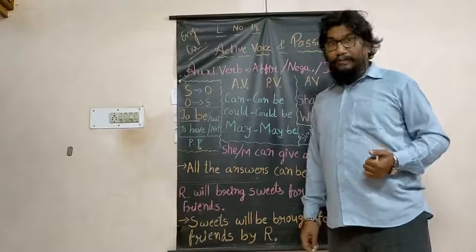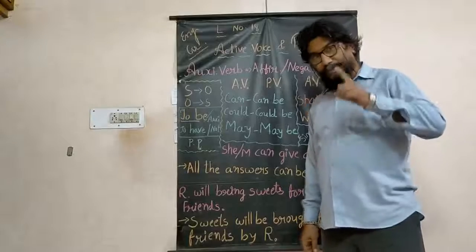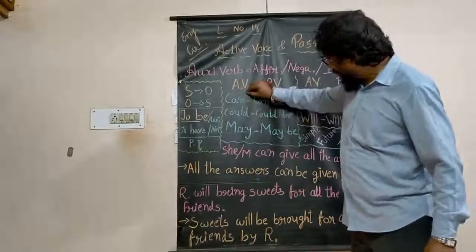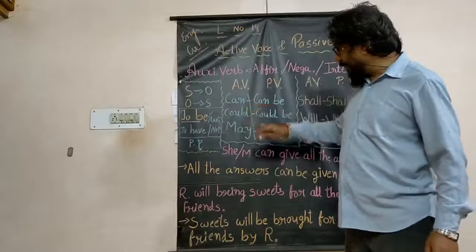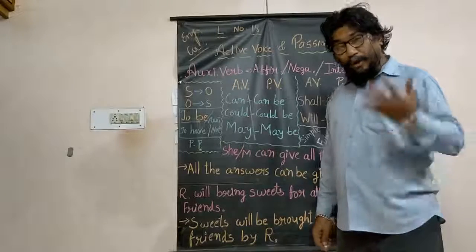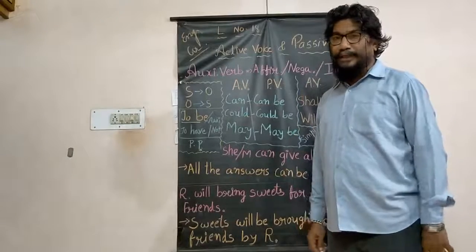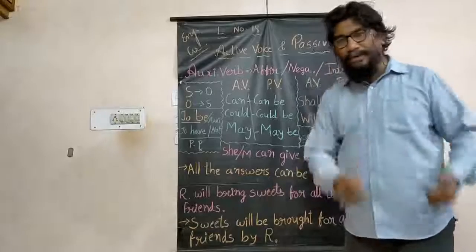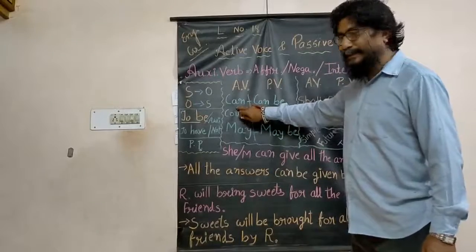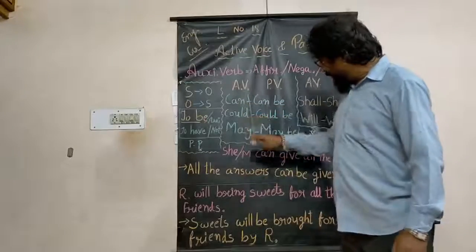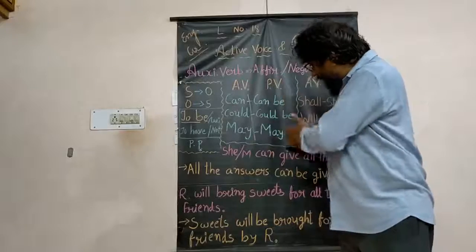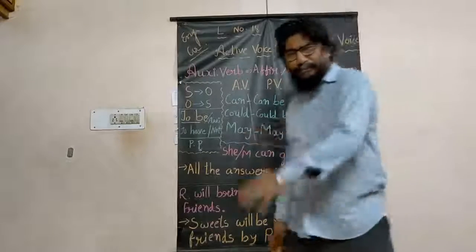Tense will not be given over there because an auxiliary verb is used instead. But the idea is very simple. In active voice, can will be given, could will be given, may will be given. For the 2B form, we simply add 'be': can becomes can be, could becomes could be, may becomes may be.